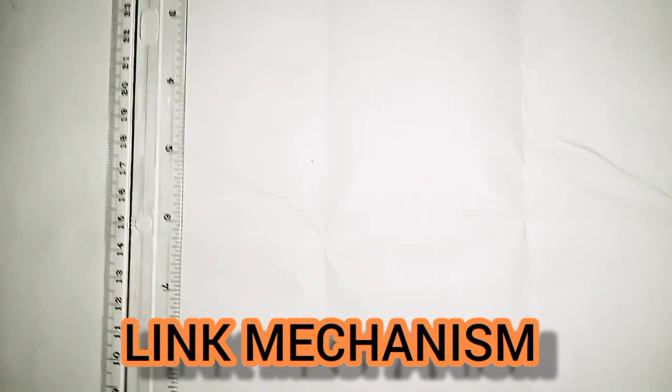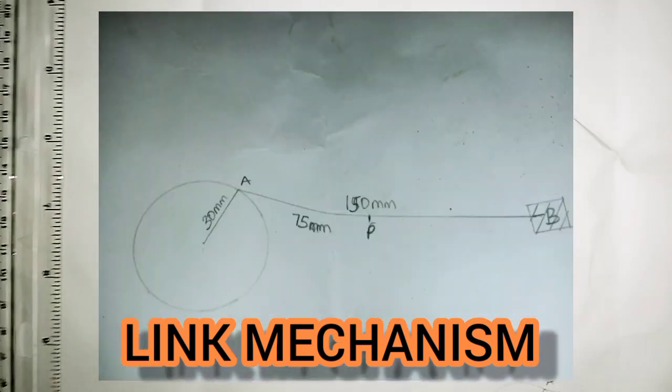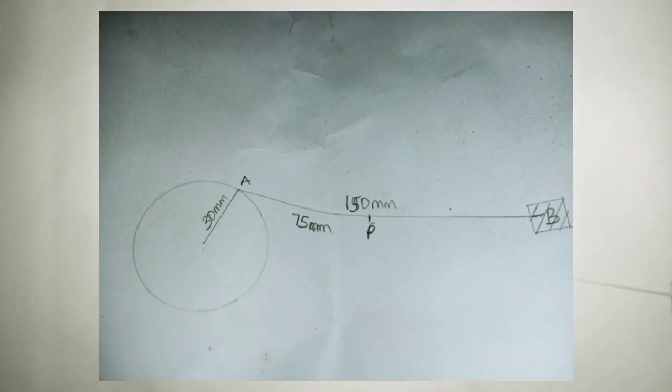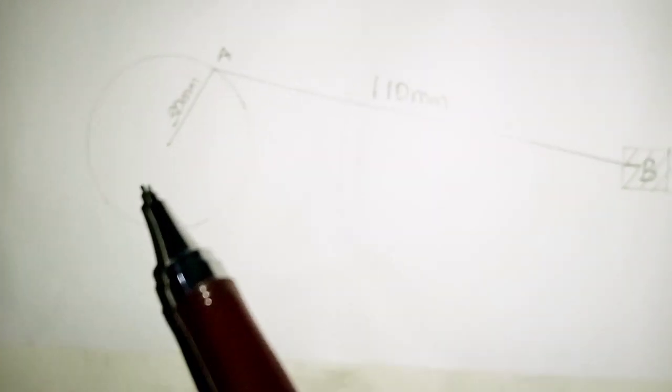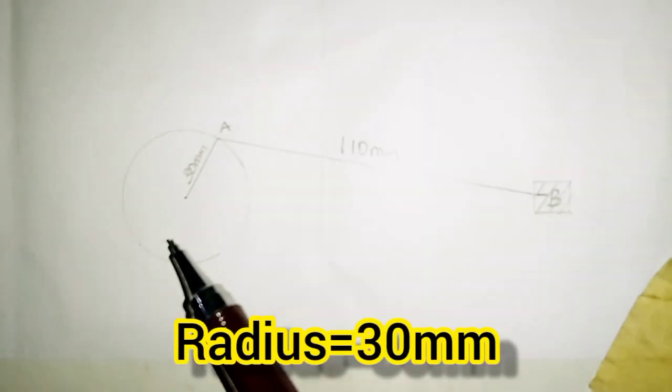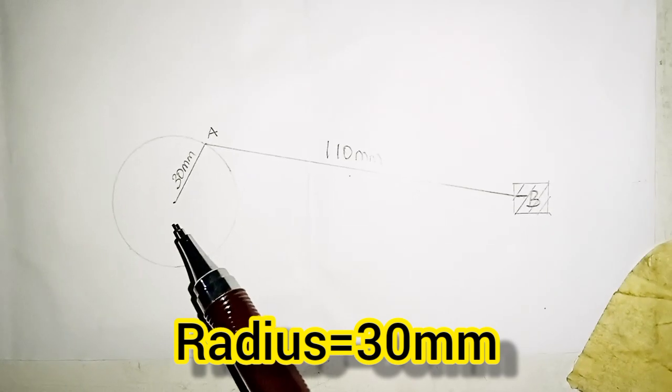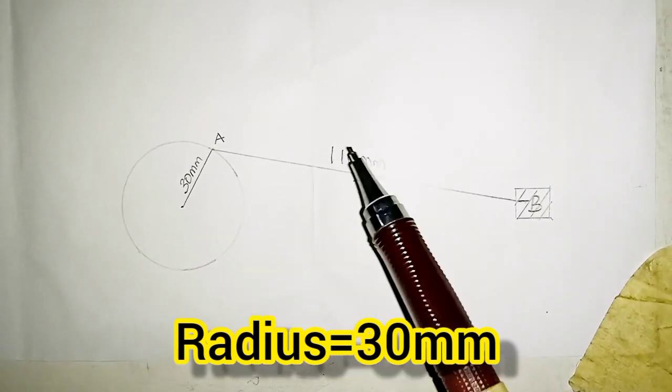We'll be drawing the mechanism diagram using the information on screen. The first thing to note is that we're given the radius of the circle to be 30 millimeters.